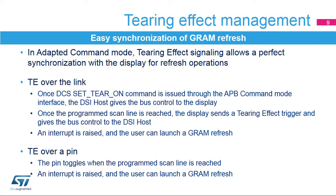When the tearing effect is signaled over the link, the DSI Host sends a set-tear-on command and gives control of the bus to the display. Once the programmed scan line is reached by the display, it sends a trigger to the DSI Host and returns control of the bus. An interrupt can be raised to launch the graphics RAM refresh. When the tearing effect is signaled over a pin, the display toggles a dedicated GPIO to trigger the DSI Host when the programmed scan line is reached. Although an additional pin is required, this mechanism avoids multiple exchanges over the link. An interrupt can be raised on the pin toggling to launch the graphics RAM refresh.